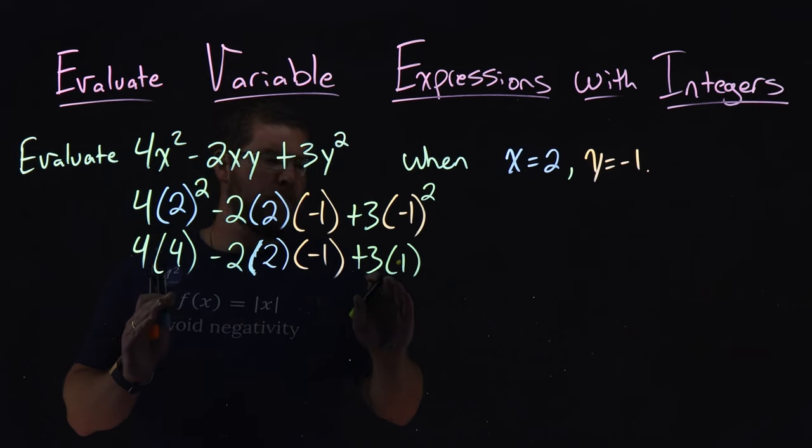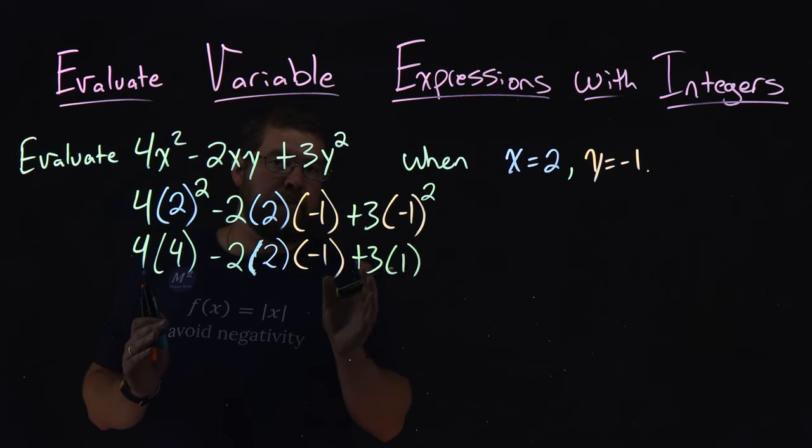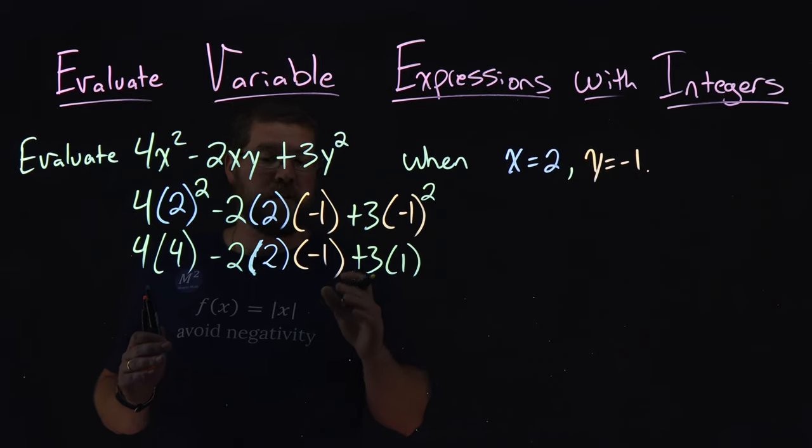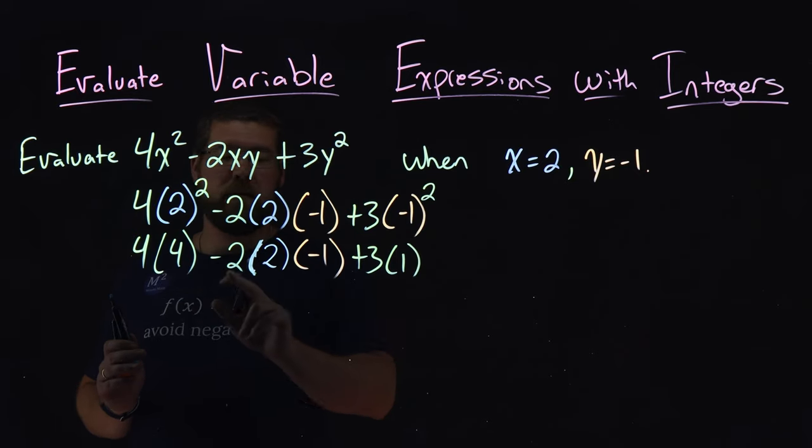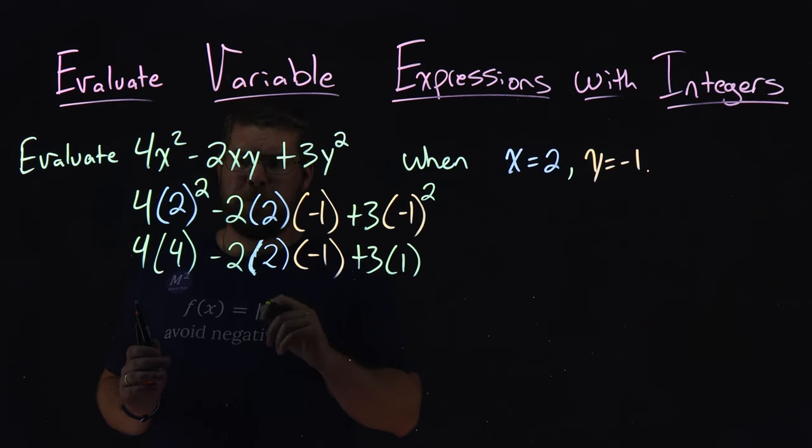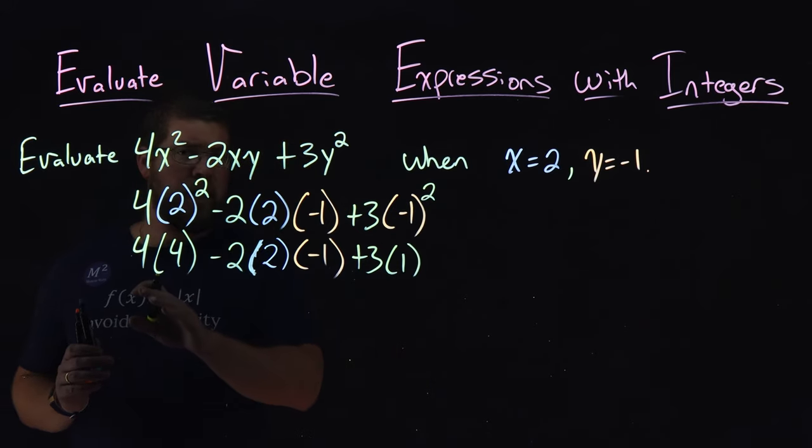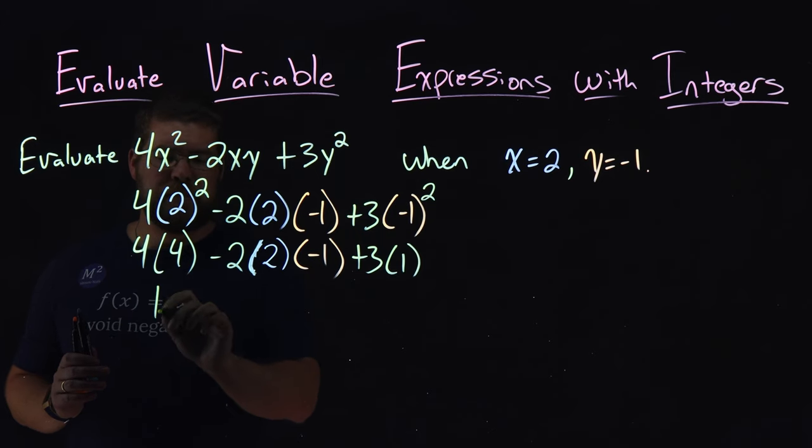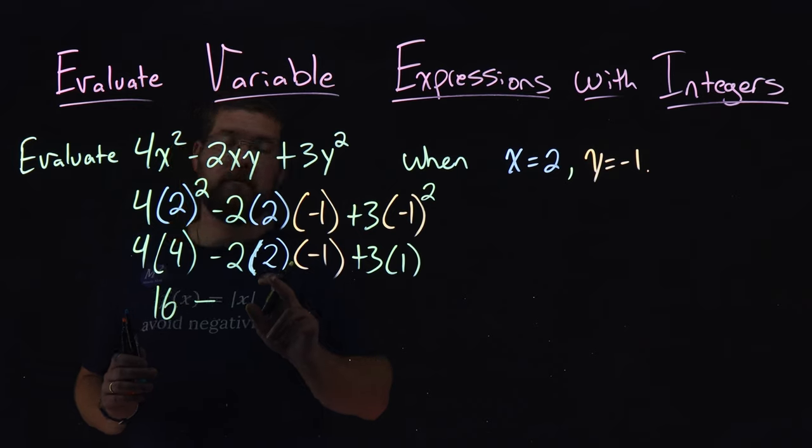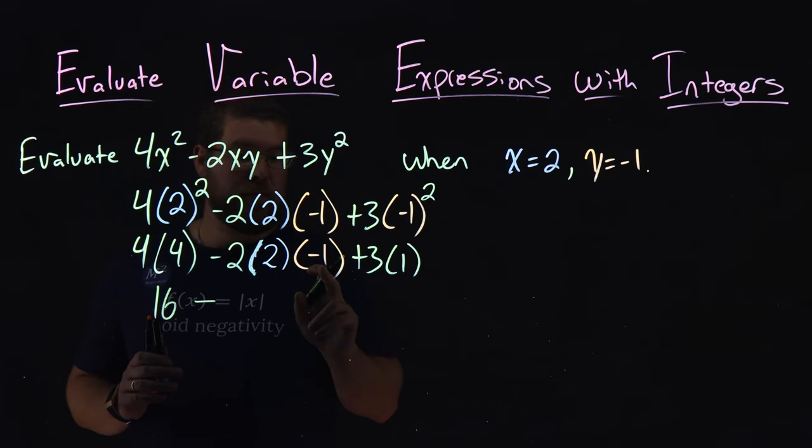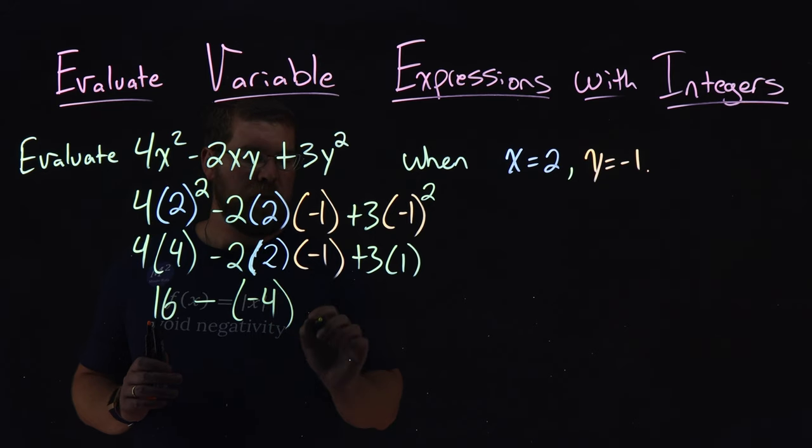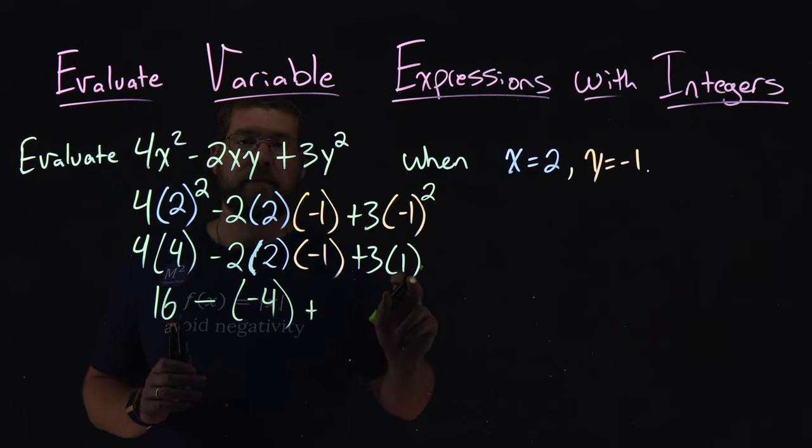Now, again, parentheses are still here, but there are only numbers inside of it. We don't have any more exponents going on, so now it's multiplication and division. And I see some multiplication going on right here, these three numbers here, and these two numbers right here. So what we're going to do is simplify that and multiply. 4 times 4 is a 16, separated by a subtraction sign. 2 times 2 is a 4, times a negative 1 is a negative 4, plus 3 times 1 is a 3.